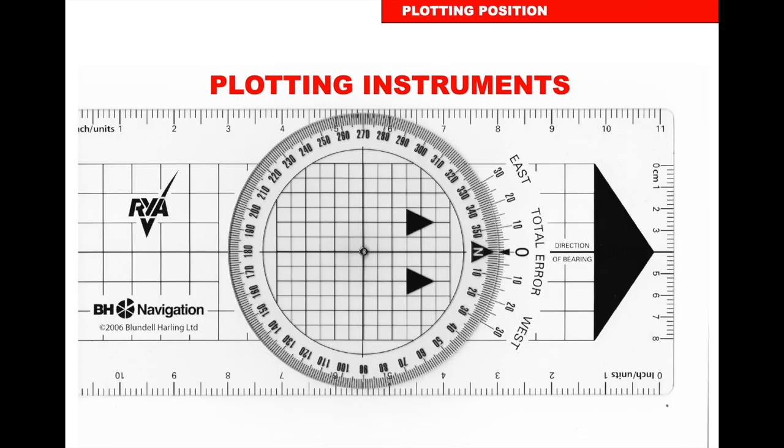You will have a plotter — this is a Bretton plotter — an oblong piece of plastic with a big arrow at one end and a rotational disk in the middle marked between 0 and 360 degrees, with small arrows in the middle.